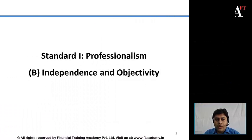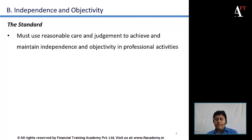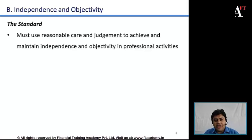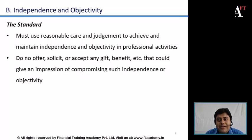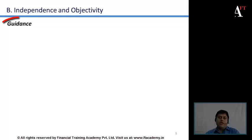The next standard is Independence and Objectivity. The standard requires all members and candidates to use reasonable care and prudent judgment to achieve or maintain their independence and objectivity in whatever professional activities they conduct. It also expects members and candidates not to offer, solicit, or accept any kind of gift, benefit, compensation, or any other benefit which could give an impression to third parties that it may compromise their independence and objectivity.